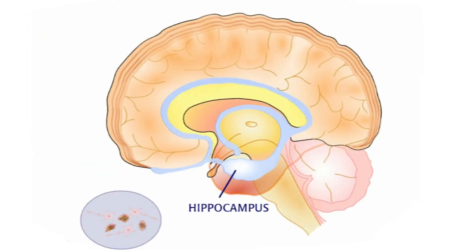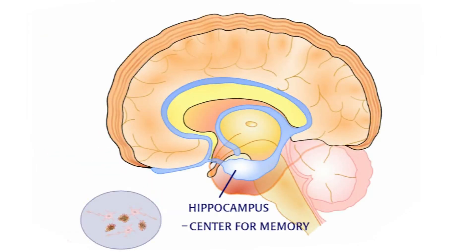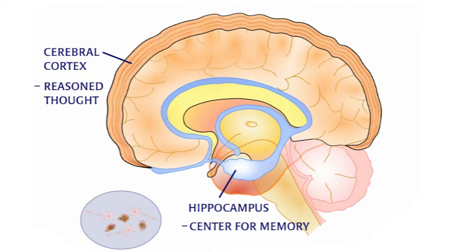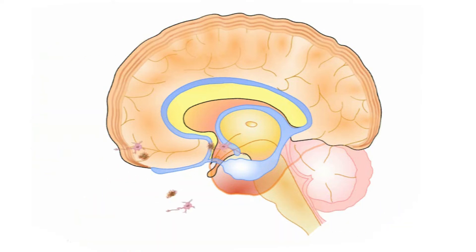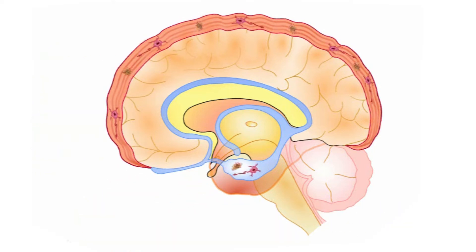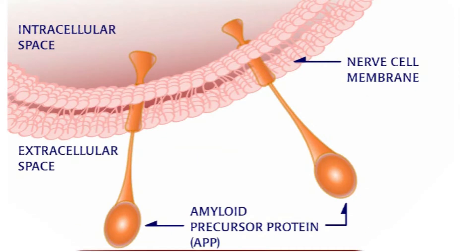However, in Alzheimer's disease, these proteins accumulate in greater quantities in two specific brain regions: the hippocampus and the cerebral cortex.